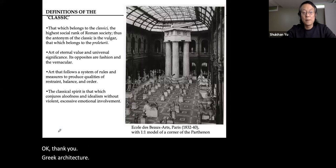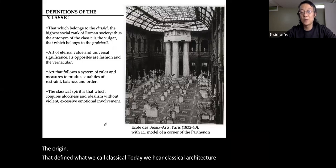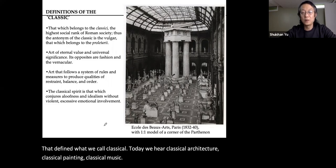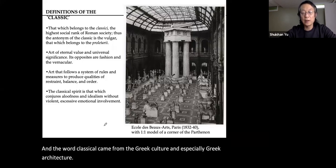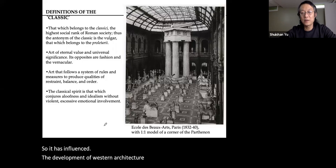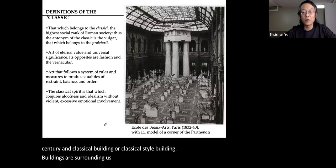Greek architecture is the origin that defined what we call 'classical.' Today we hear classical architecture, classical painting, classical music — and the word 'classical' came from Greek culture, especially Greek architecture. It has influenced the development of Western architecture all the way to the early 20th century, and classical-style buildings surround us everywhere around the world.